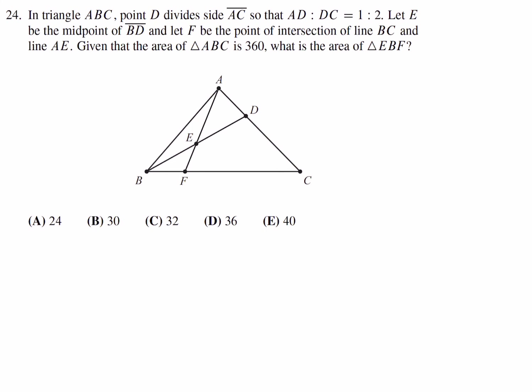In triangle ABC, point D divides side AC so that AD to DC, the ratio, is 1 to 2. Let E be the midpoint of BD and let F be the point of intersection of line BC and line AE. Given that the area of ABC is 360, what is the area of EBF? Well, this is 1 to 2, so that means this triangle's area compared to that triangle's area is also in the ratio 1 to 2. So the total area is 360, so that means this area would be 120, this triangle, and this area would be 240.